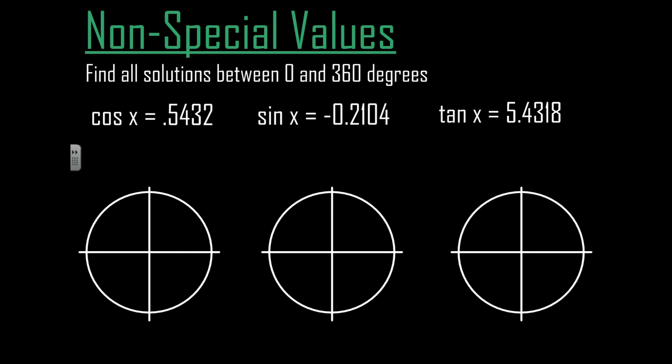So in the unit circle so far we've really been working with these special triangle values: 45, increments of 30, 60, and of course the 90 degree increments as well, which is good and we've developed an understanding of cosine, sine, and tangent outside of just a triangle.